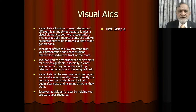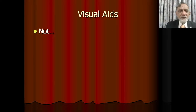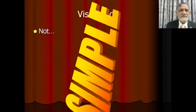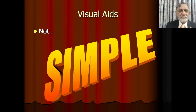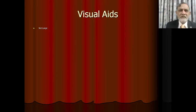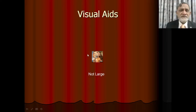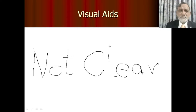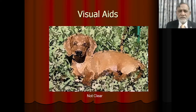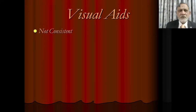Now some examples: if you make a slide that is not simple — jumbled up with too many lines and too many words — it is not recommended. Visual aids should be simple. A slide that has moved items up and down doesn't look good — not large enough, not recommended. Not recommended again because the picture size is too small, the writing is shabby and not clear. A dog image merged into the background is not clear and not recommended. Slides should be consistent.